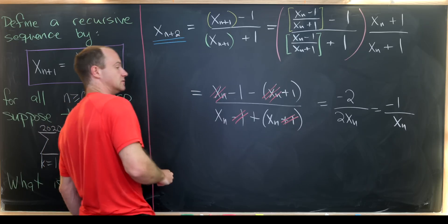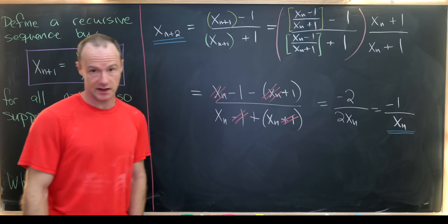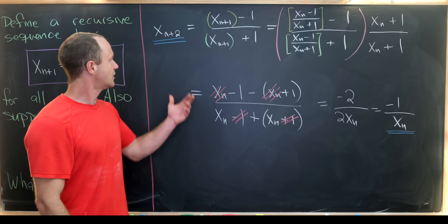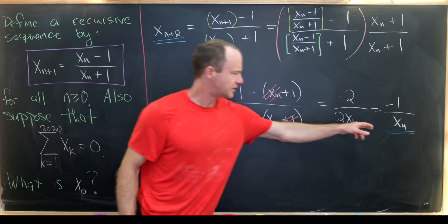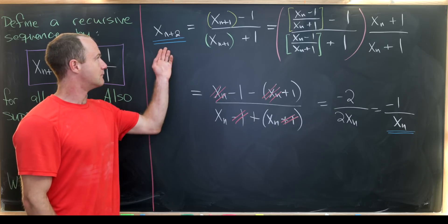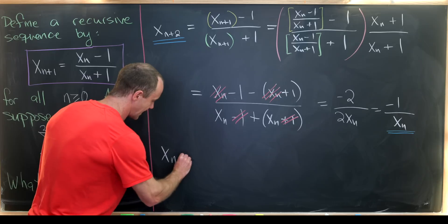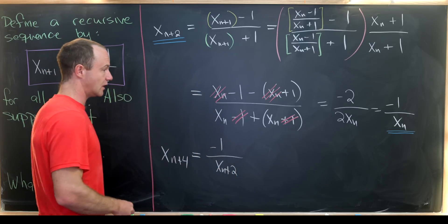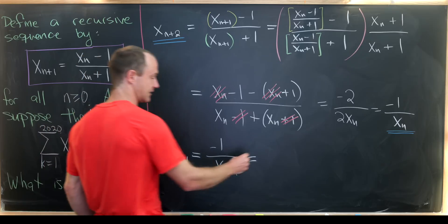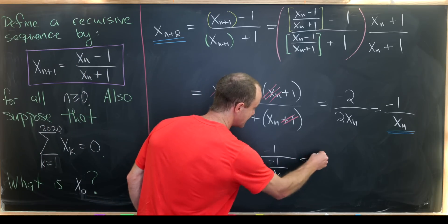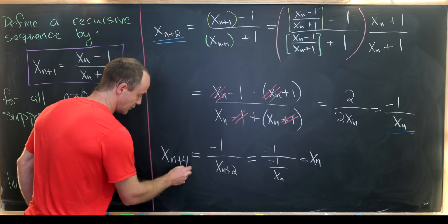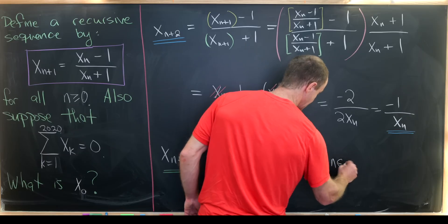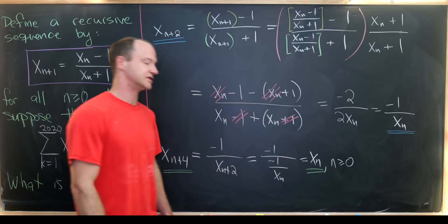Notice that if x_{n+2} equals minus 1 over x_n, composing this with itself gives the identity, which motivates us to look at x_{n+4}. So x_{n+4} equals minus 1 over x_{n+2}, using the blue recursion, and then applying it again gives minus 1 over minus 1 over x_n, which cancels to x_n. So x_{n+4} equals x_n for all non-negative integers n.